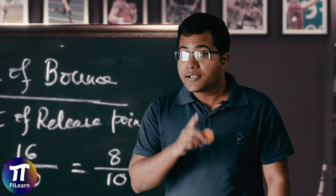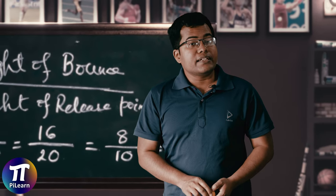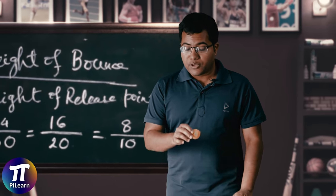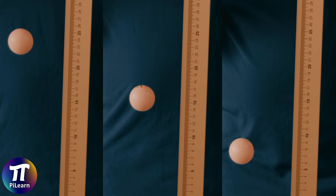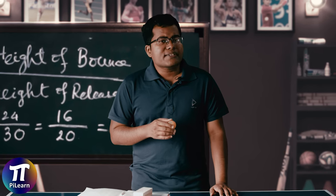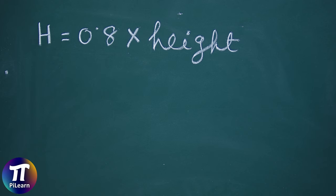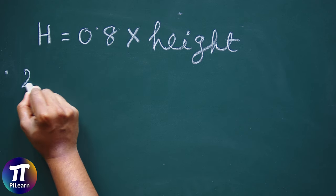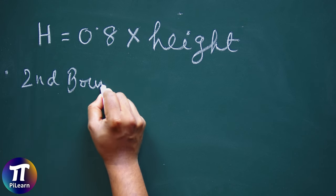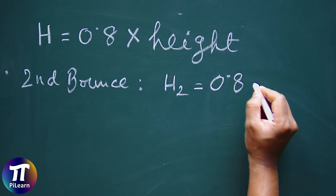However when we look at multiple bounces it becomes even more interesting. When I release the ball from this height its velocity is 0. When does its velocity become 0 again? It is the moment when the ball bounces back and again reaches its maximum height. So I can assume that the downward motion of the ball from this point is similar to releasing the ball from 24 centimeter. It will bounce back about 0.8 times the height, which means that in the second bounce it will reach a height h2 equal to 0.8 times 24 centimeter.